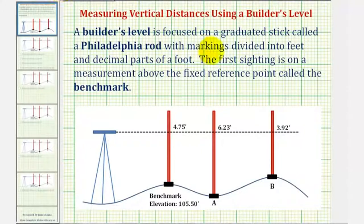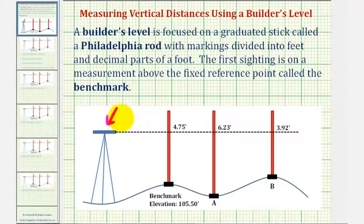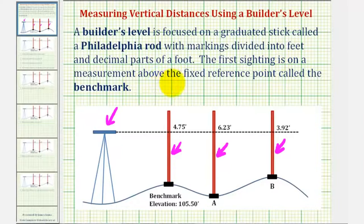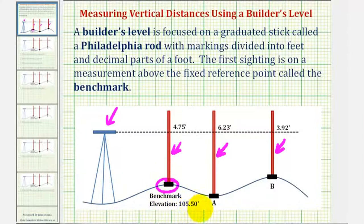A builder's level is focused on a graduated stick called a Philadelphia rod with markings divided into feet and decimal parts of a foot. In our diagram, this is the builder's level, and we have three red Philadelphia rods — one, two, and three. The first sighting is on a measurement above a fixed reference point called the benchmark. Our benchmark is this point here with a known elevation of 105.5 feet, or 105 and 50 hundredths feet.